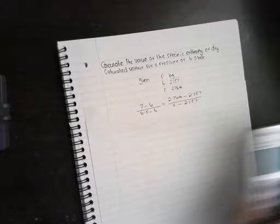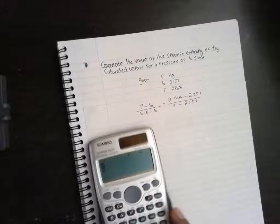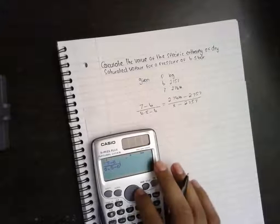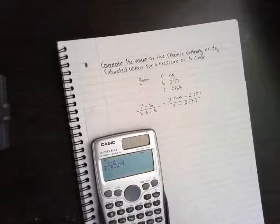I'll put that straight into a calculator to see what you get. So I've got 7 minus 6 over 6.5 minus 6 equals 2764 minus 2757 over the variable x which is alpha x minus 2757. Then shift solve equals.